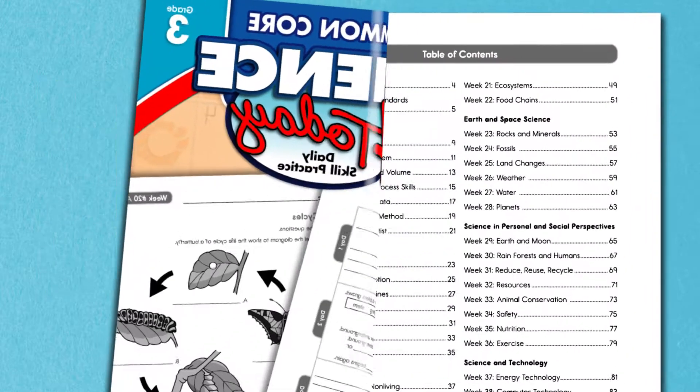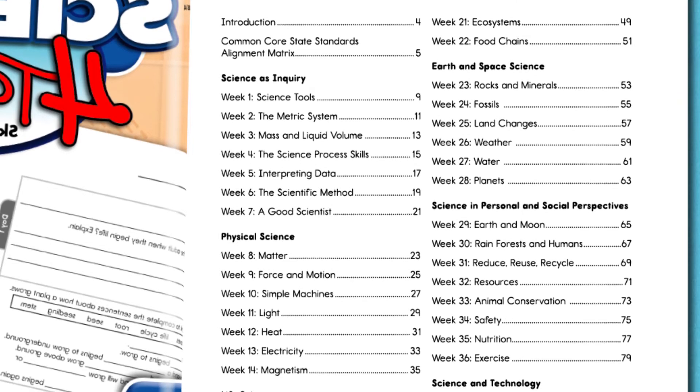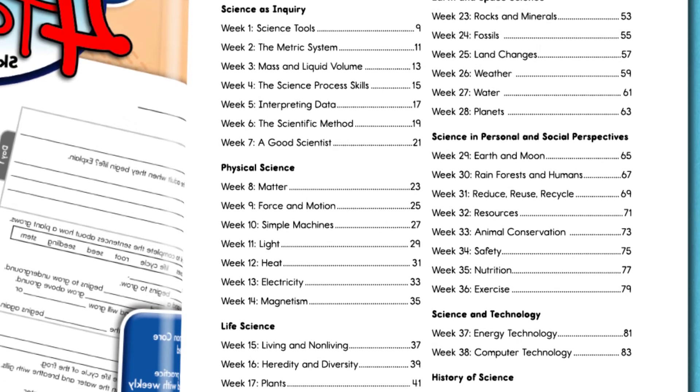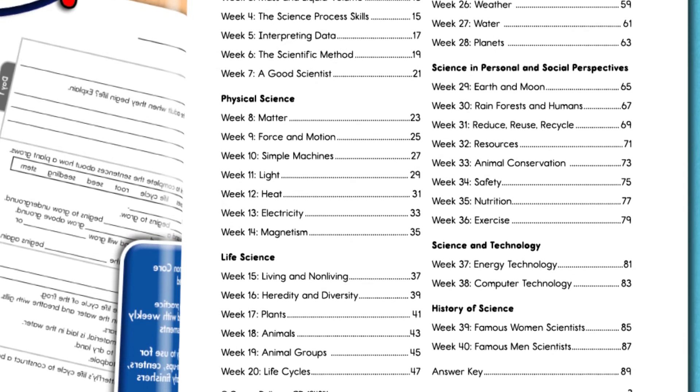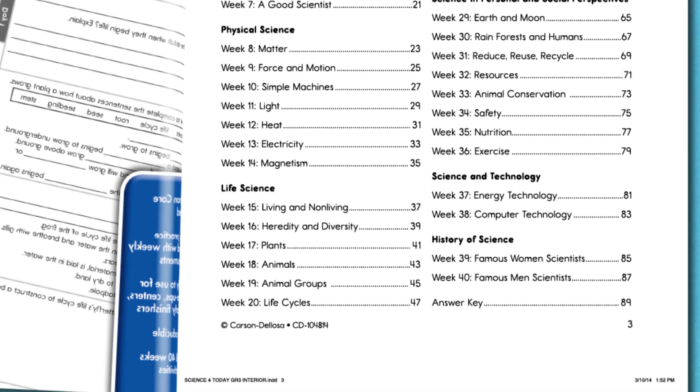The Common Core Science for Today series covers 40 weeks of science topics with engaging cross-curricular activities. Weeks are divided by topic so they can be taught in any order to fit your individual science curricula.